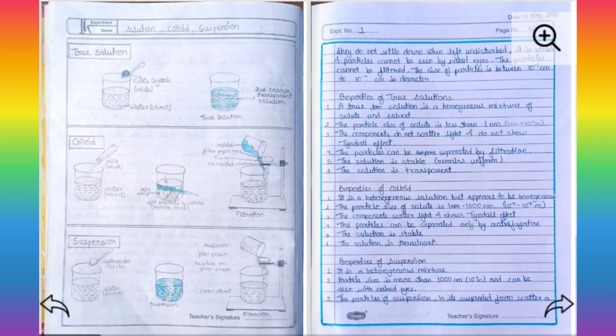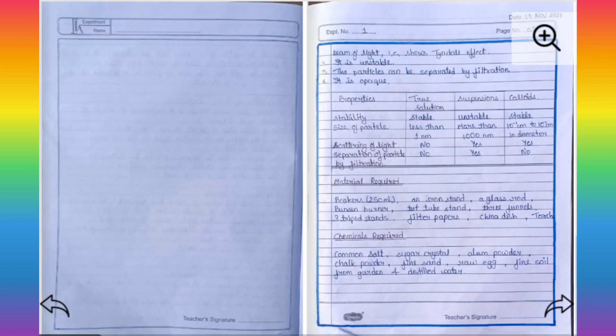On that page, I draw some diagram which is necessary. Then I draw a table. Then below, I write materials required and chemical required in this experiment.